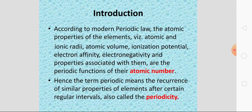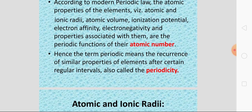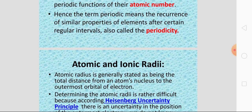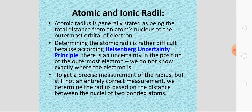Yani ki, a regular interval ke baad, agar elements ki similar properties hoti hai, baar baar agar wohi gain kar leta hai, unme ek regular interval hoti hai unki properties mein, toh usi ko periodicity kehte hain. Toh yahaan hum ek-ek periodic property ke baare mein detail se study karenge, jaise sabse pehle hum yahaan padhenge atomic and ionic radii ke baare mein.